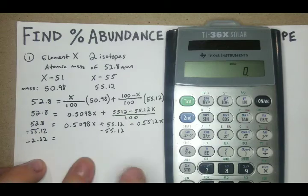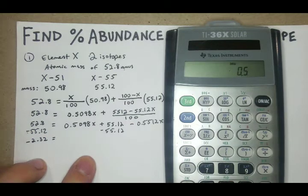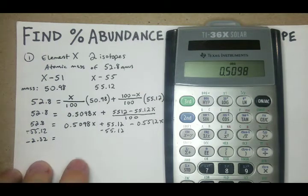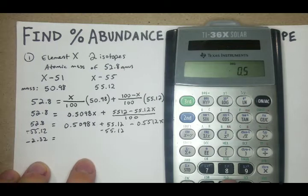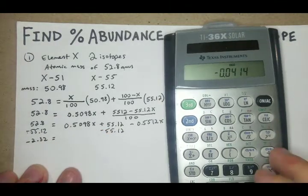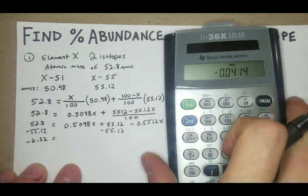Now we're going to have the 0.5098X minus, because that's a negative, minus 0.5512X, which we're going to get a negative 0.0414.